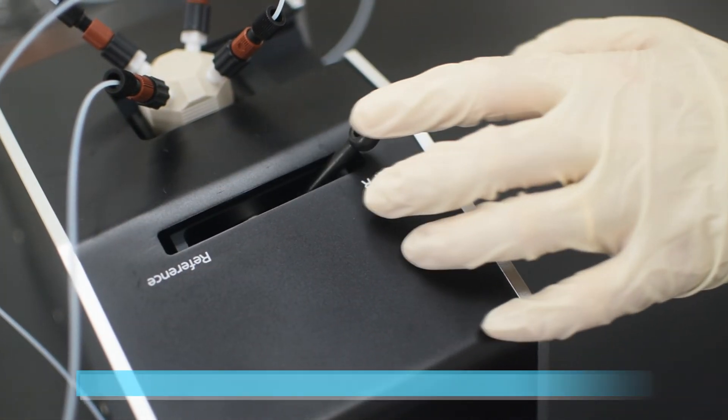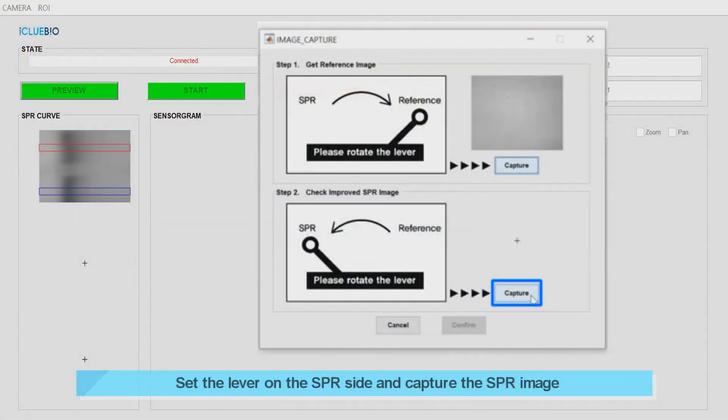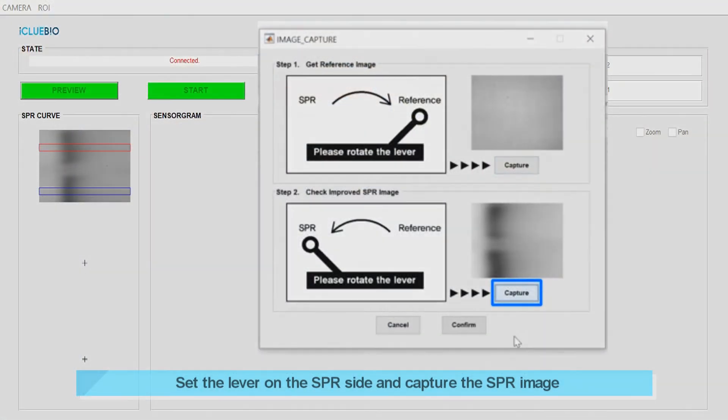Second, set the lever on the SPR side, then capture the SPR image from the IMSTART Mini software. You can check two SPR bands on the screen.